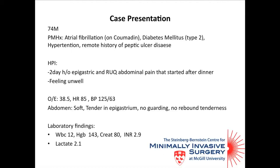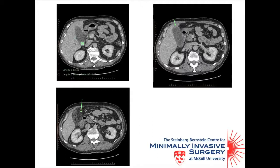He presented with a two-day history of abdominal pain, mostly epigastric and right upper quadrant. He was febrile but hemodynamically stable. An abdominal CT scan was performed, initially leading the team towards a diagnosis of acute cholecystitis.